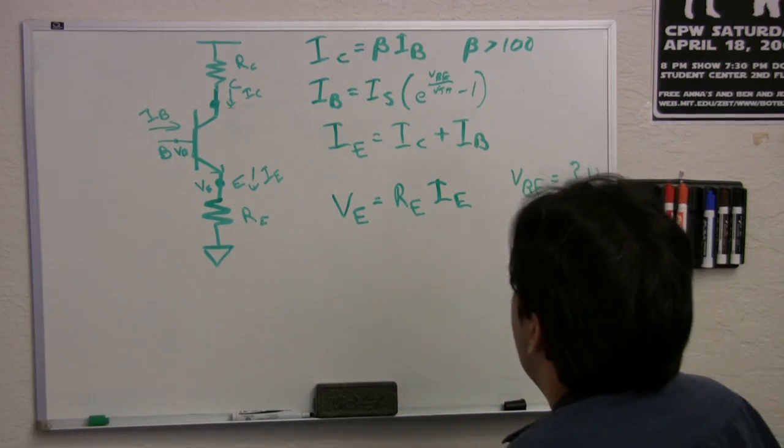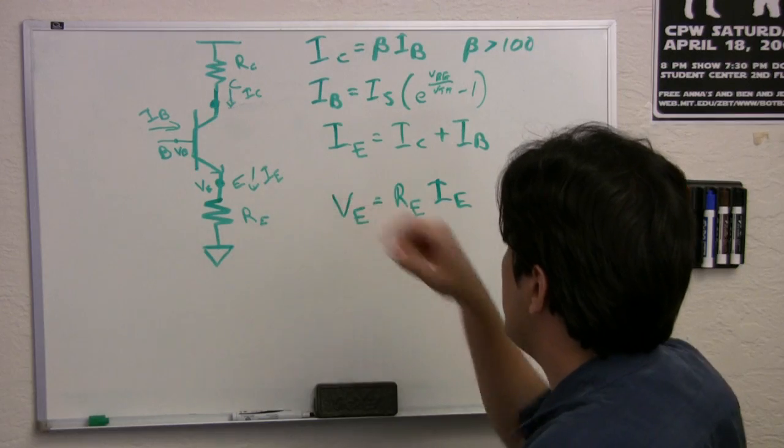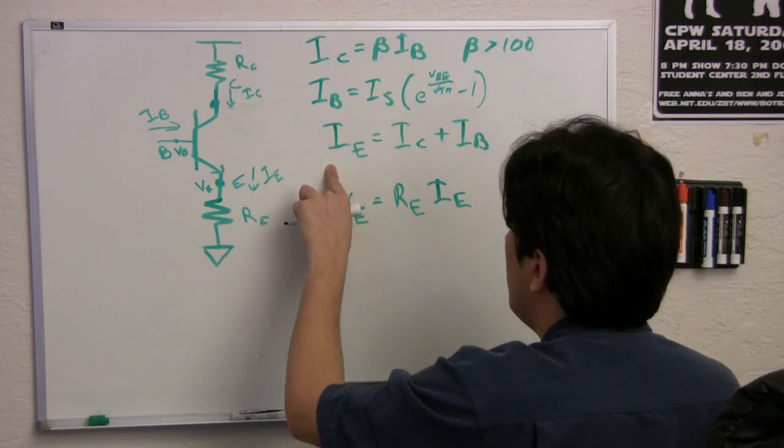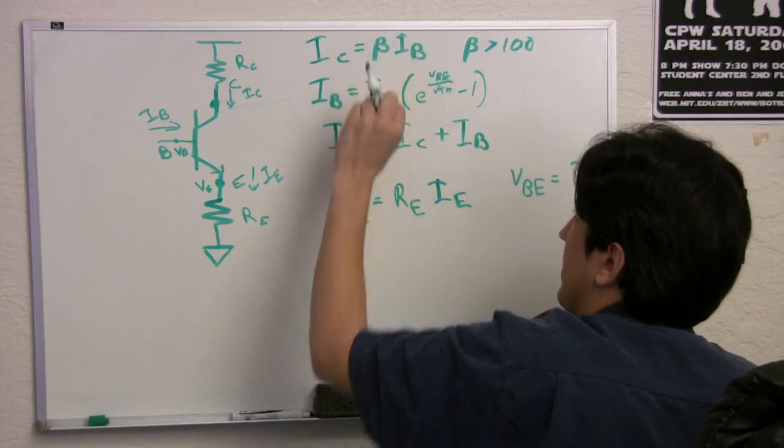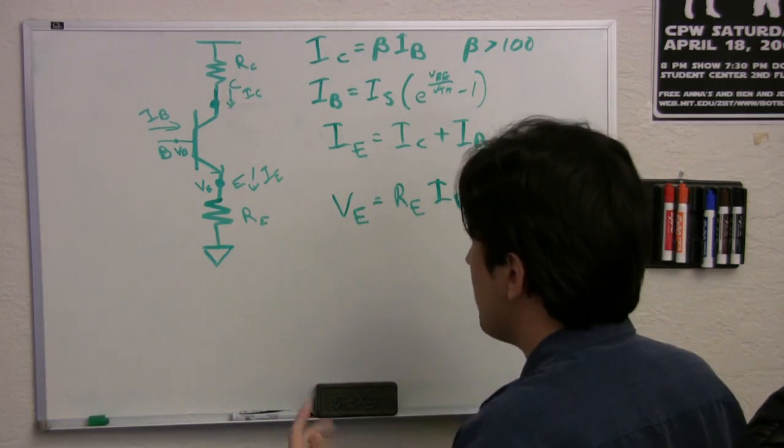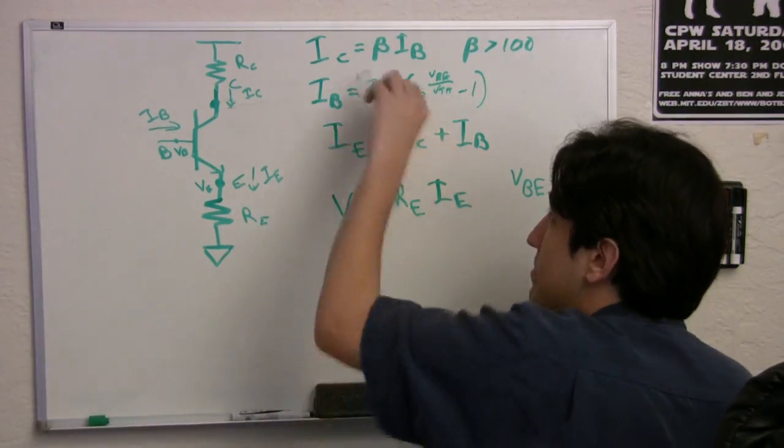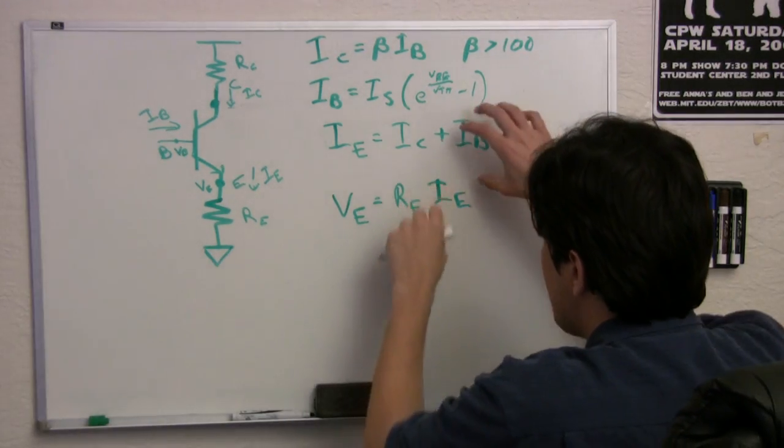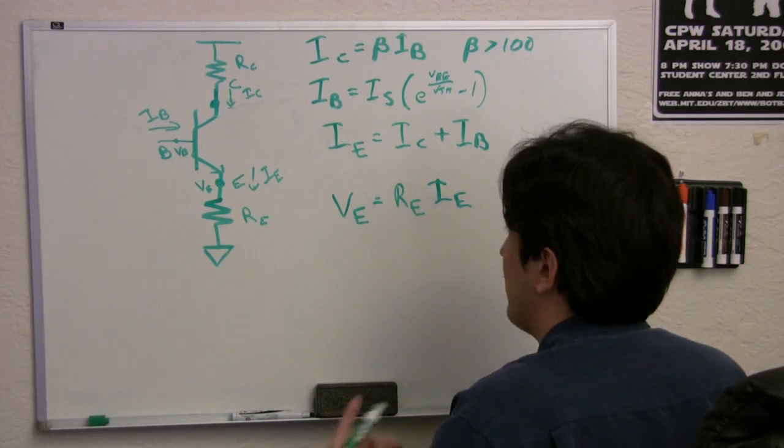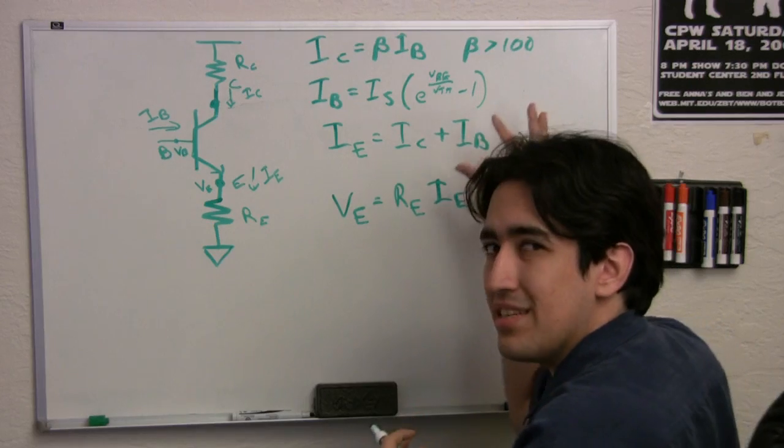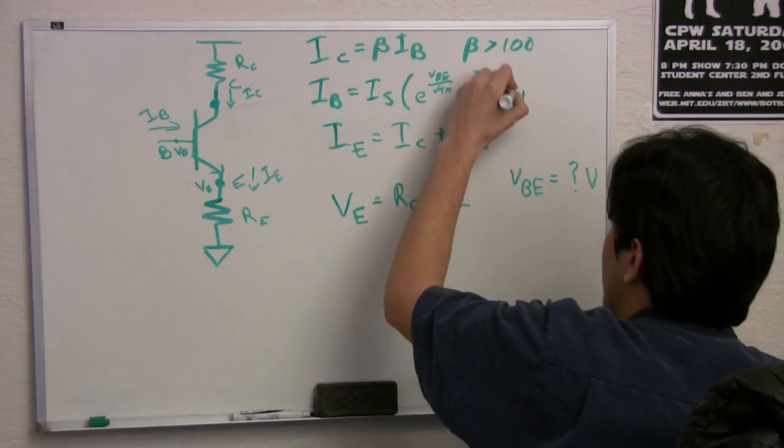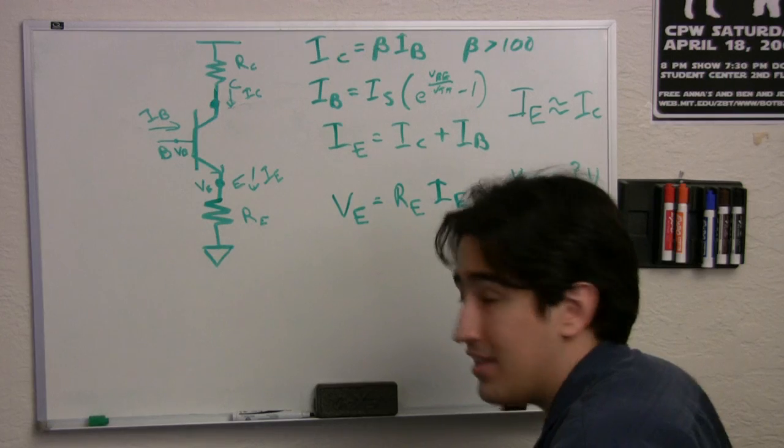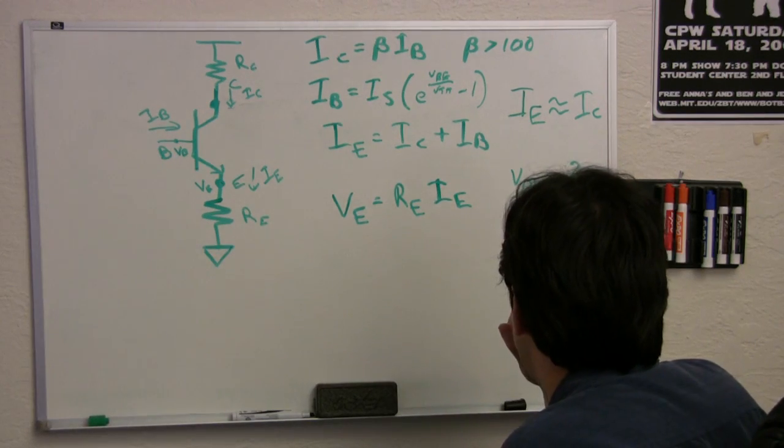So before we move on, there's one more thing that I need to convince you of. Let's see how these currents are actually related to each other. We know for a fact that IE equals IC plus IB. That is absolutely true. We also know that IC is 100 times or more IB. So that means that if IC was 100, IB was just 1, which means that IE is 101. So IB is really just 1 hundredth of whatever IC is. IB is really small compared to IC. So we can approximate IE to be about the same as IC. It's not exactly true, but it's close enough.